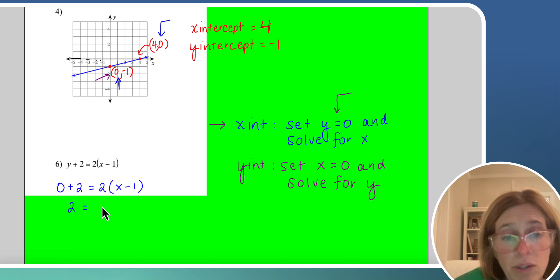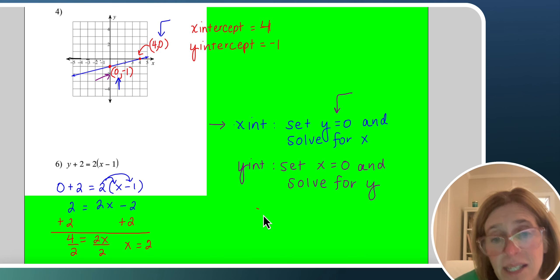So I get 2 equals, I'd have to distribute my 2 here, giving me 2x minus 2. And I would solve for x. So I would add 2 to both sides, giving me 4 equals 2x. And then I would divide by 2. So x equals 2. So I know that my x intercept equals 2.